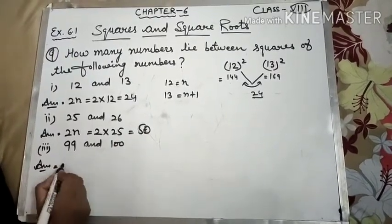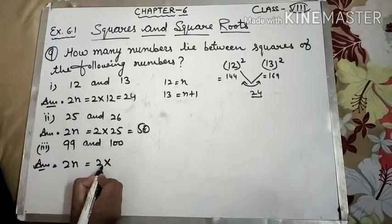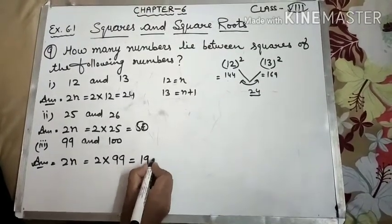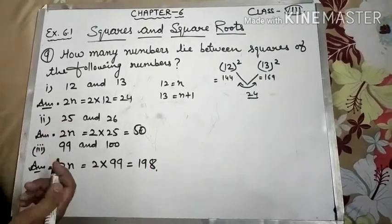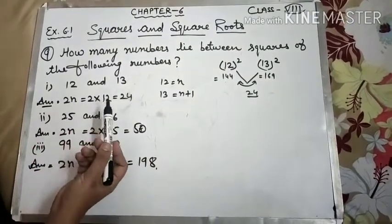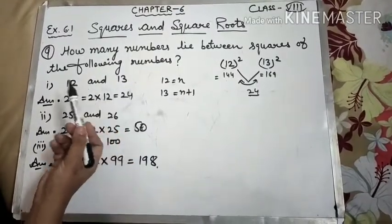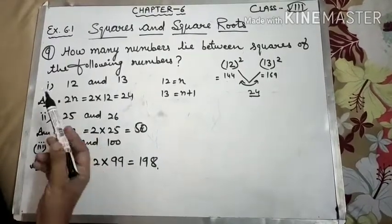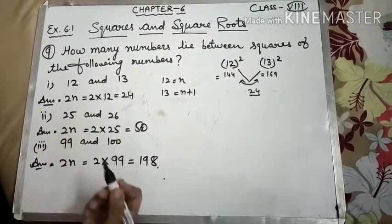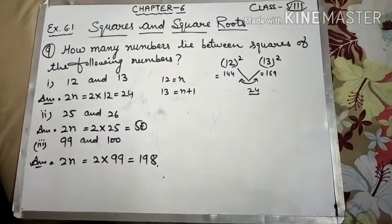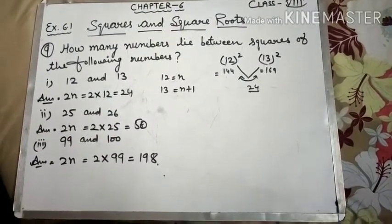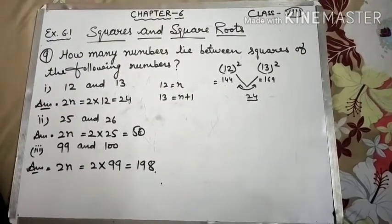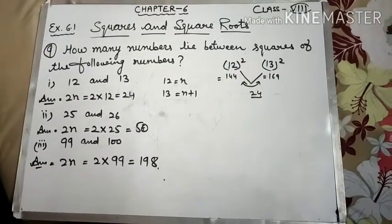So we have this formula: if you have 2 consecutive numbers, to find numbers between their squares, use 2 times the smaller number, 2n. Question 9 is complete, and Exercise 6.1 is complete. In my next video I will start Exercise 6.2. If you like my videos, please subscribe to my channel, press the like button, and turn on the notification bell. Thanks for watching.